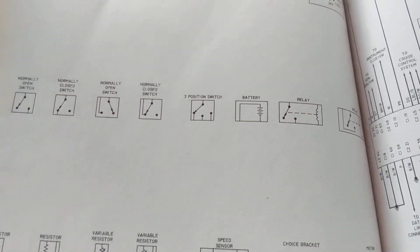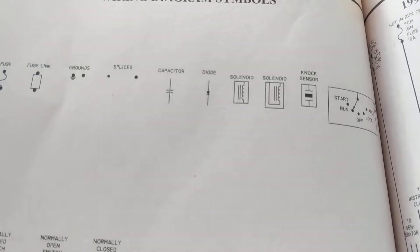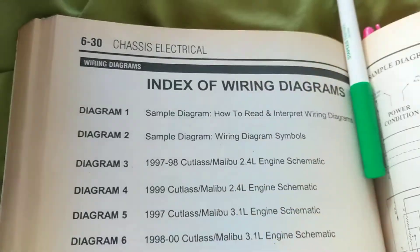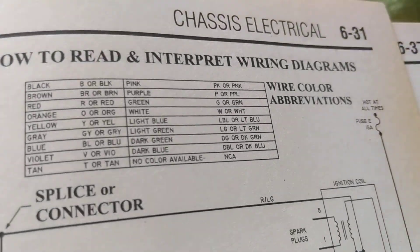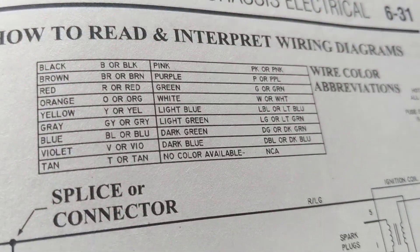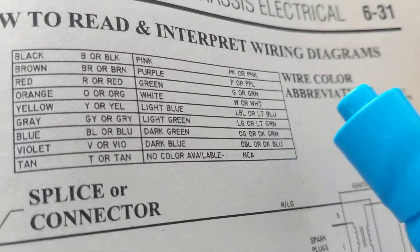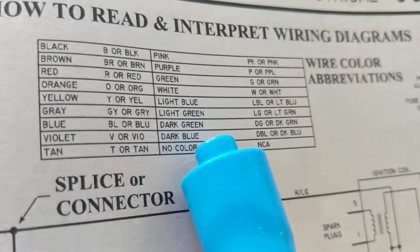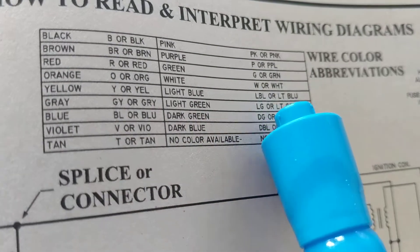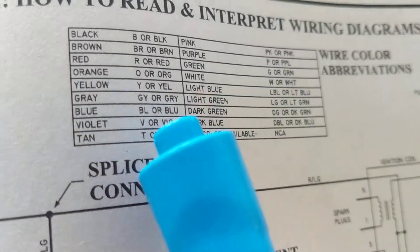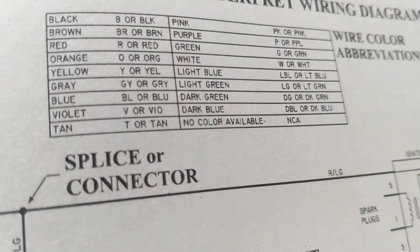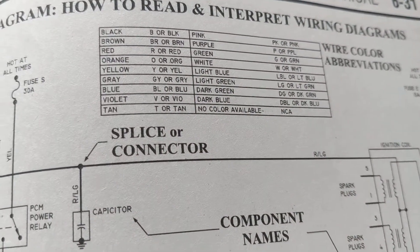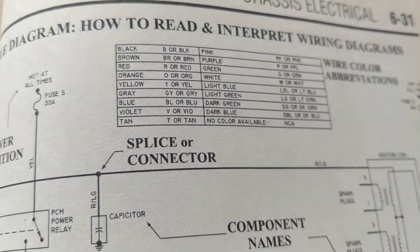These symbols come up all the time in every schematic. Next is a page you have to know — how to interpret the colors. You'll see abbreviations they'll give you: for instance, W is white, LBL is light blue, GY is gray. They might give you this truth table and you have to figure out the abbreviations, which is not that hard.